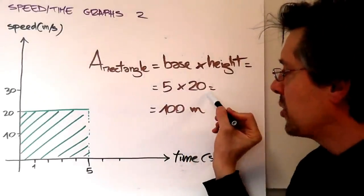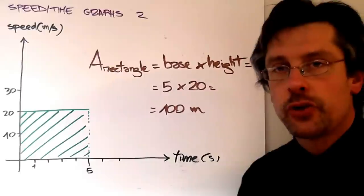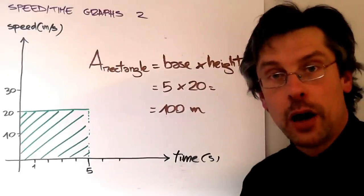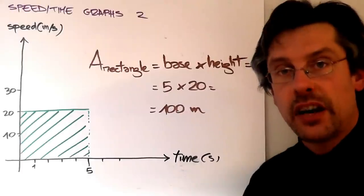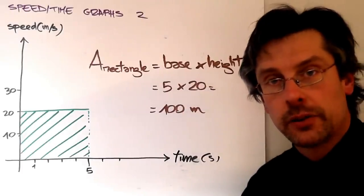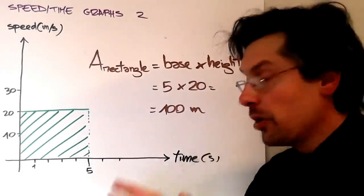5 times 20 makes 100. Now we already found the number 100 related to this graph, and that was the distance traveled.